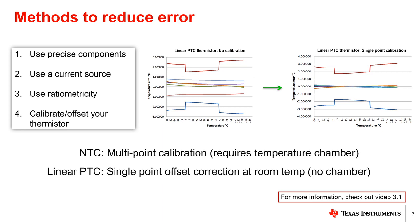And this is what requires a temperature chamber. On the other hand, as seen on the graphs on screen, a linear PTC thermistor has roughly the same amount of error across the whole operating temperature range due to its linear and stable characteristics. Because of this, a single point offset calibration at room temperature during your final assembly process can greatly reduce the error across the entire temperature range and all without the use of a temperature chamber.